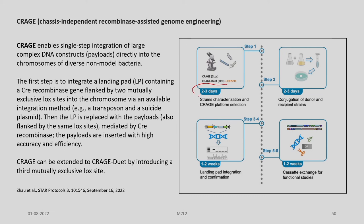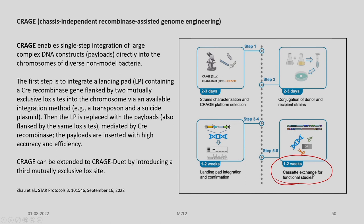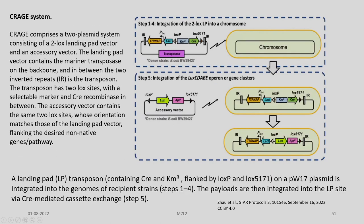You can see the time required for carrying out each step. Step 1 requires around two to three days. Step 2 — conjugation of donor and recipient strains — requires around two to three days. Steps 3 to 4, which cover landing pad integration and confirmation, require one to two weeks. Steps 5 to 8, involving cassette exchange for functional studies, require another one to two weeks.